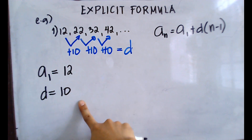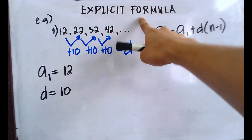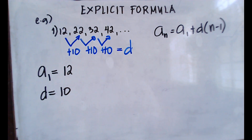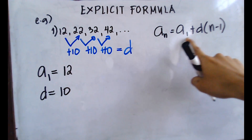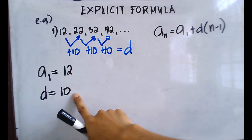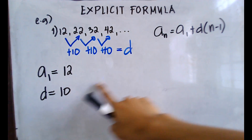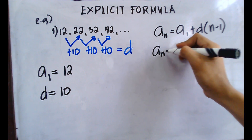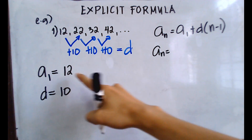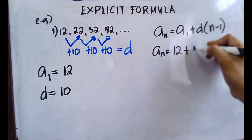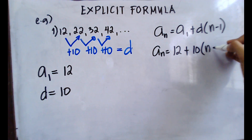Now let's find the explicit formula for this sequence. Substitute the given values — 12 as the first term and 10 as the common difference — into the arithmetic sequence formula. So we have: a sub n equals 12 plus 10 times (n minus 1).